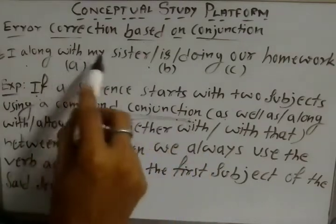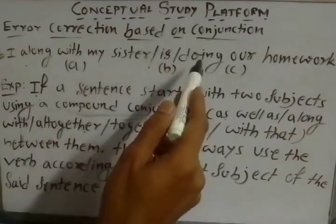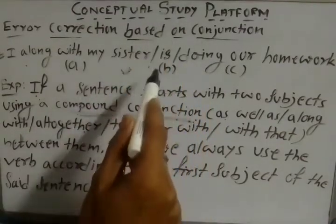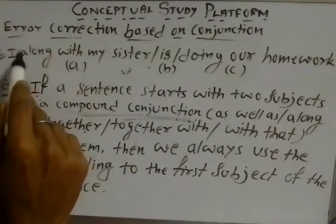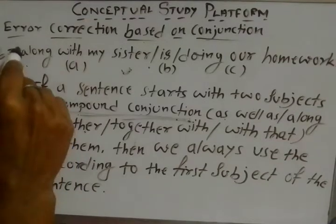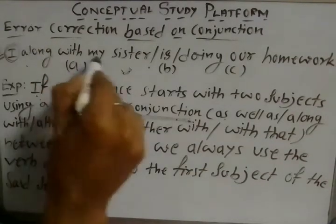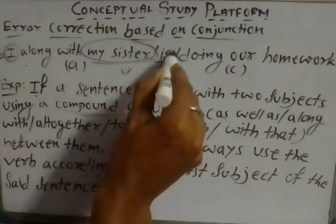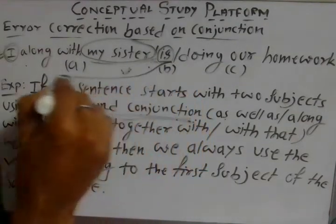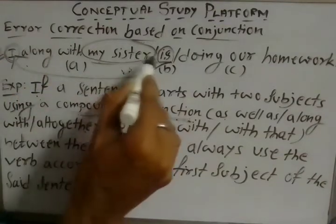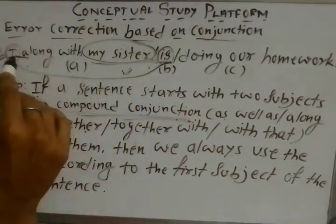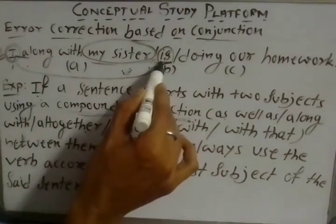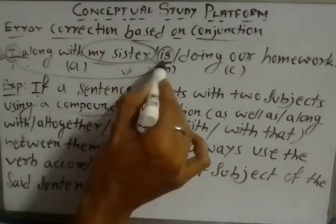So, 'I along with my sister is doing our homework' — this is a purely incorrect sentence. The reason: the sentence starts with two subjects. 'I' is the first subject and 'my sister' is the second subject. The verb must always agree with the first subject. Here, the first subject 'I' is singular, so the verb should also be singular and appropriate for 'I'.